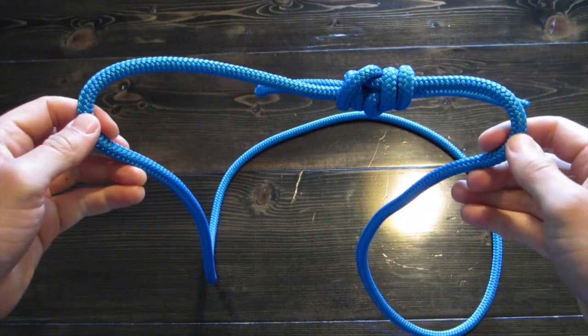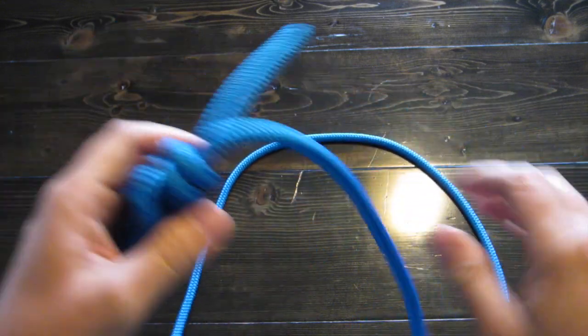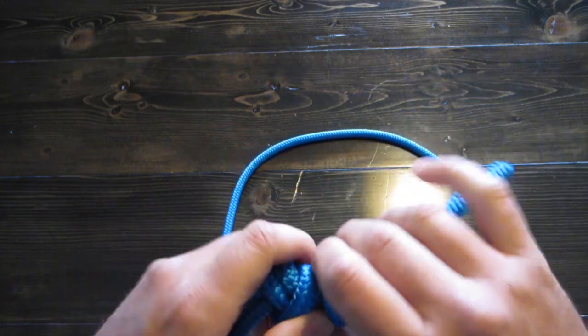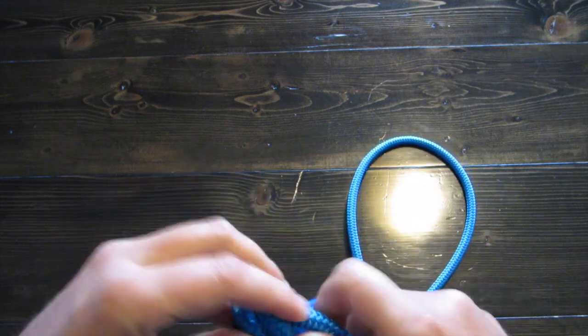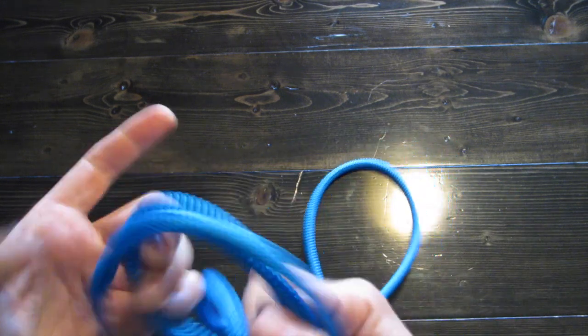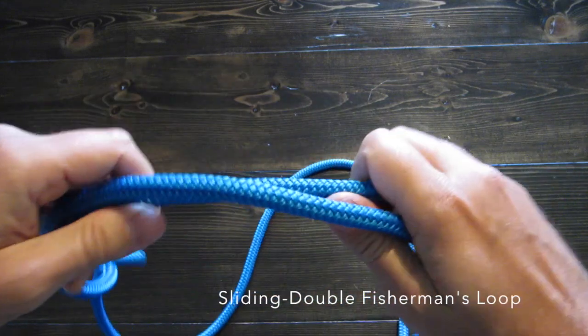And, it made a loop. Pretty cool. This loop can bear just as much weight as probably the capacity of the rope itself. And, now we're gonna do the cool one. The sliding double fisherman's loop. Or, not. I think it's loop. Anyhow.